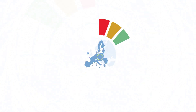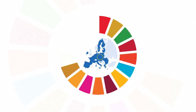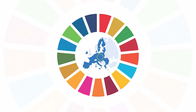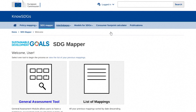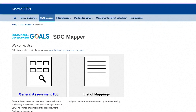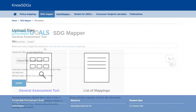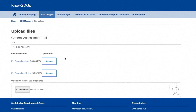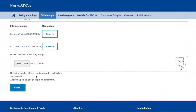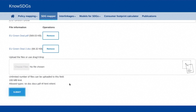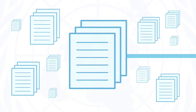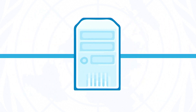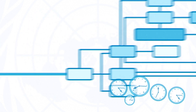What if we could visualize the extent to which policies address these goals and targets? The SDG Mapper tool is a web application that identifies relevant goals and targets in real time and quickly displays the results. It automatically mines a document's text and identifies key words that relate to specific goals and targets. Thousands of pages can be analyzed in a matter of minutes, saving hours of work.